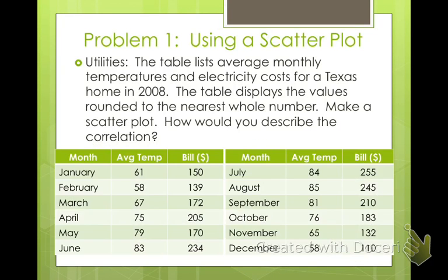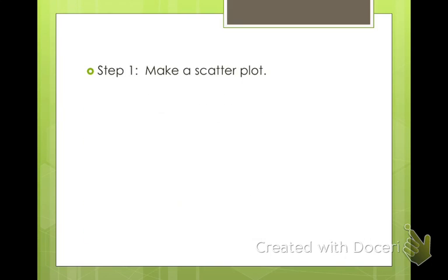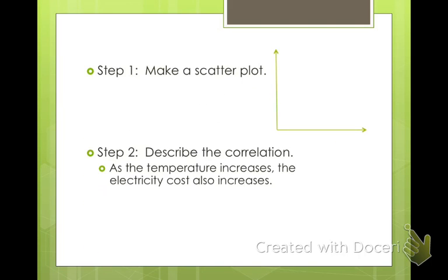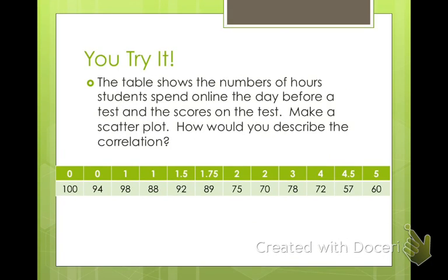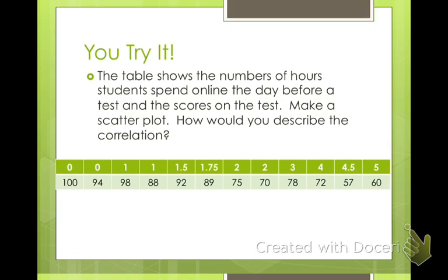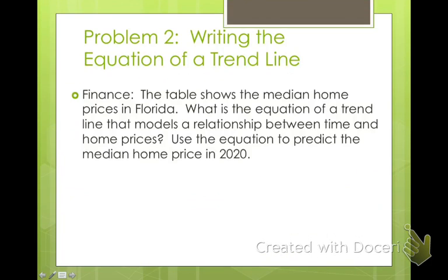We already made the scatter plot and described the correlation. We noticed it's a strong positive. Okay, why don't you go ahead and try this one. With this one, we have a pretty strong negative correlation. You can tell that the less time you spend on the internet the day before you take a test, in general, the better the students did. Why do you think that might be? Because they were taking the time to study. Obviously.